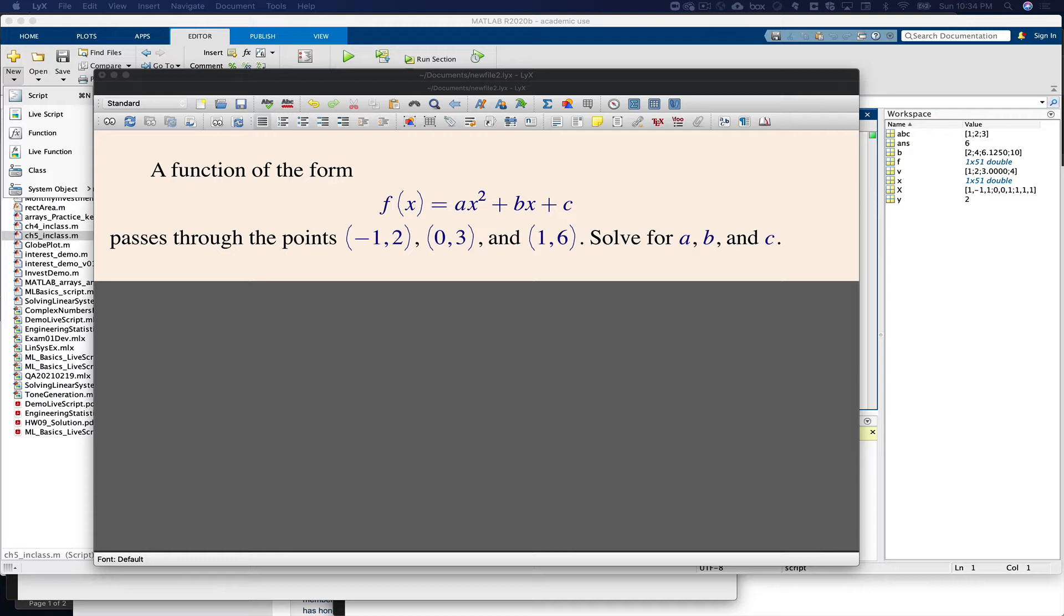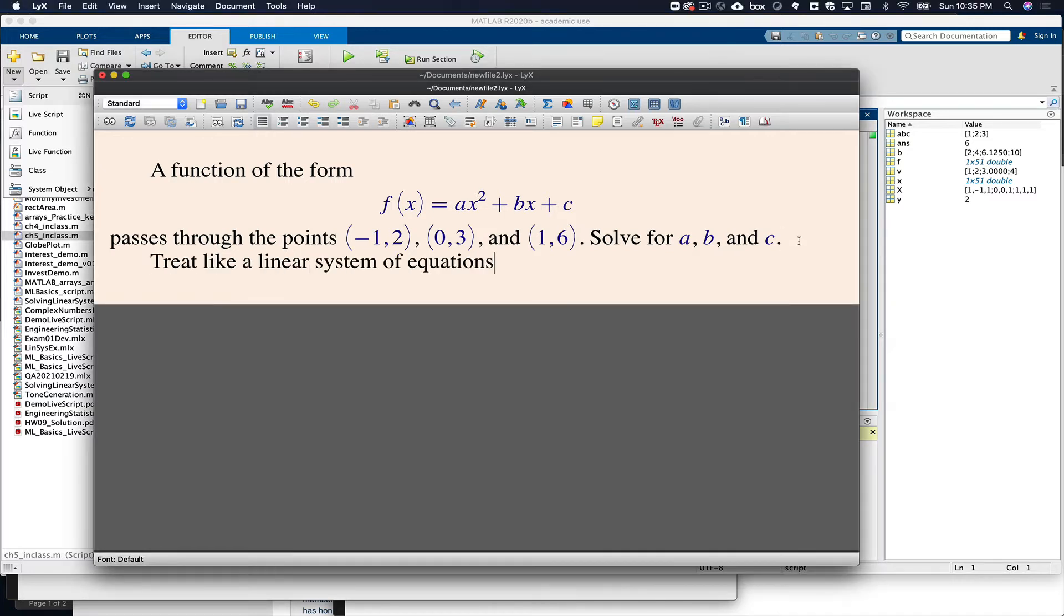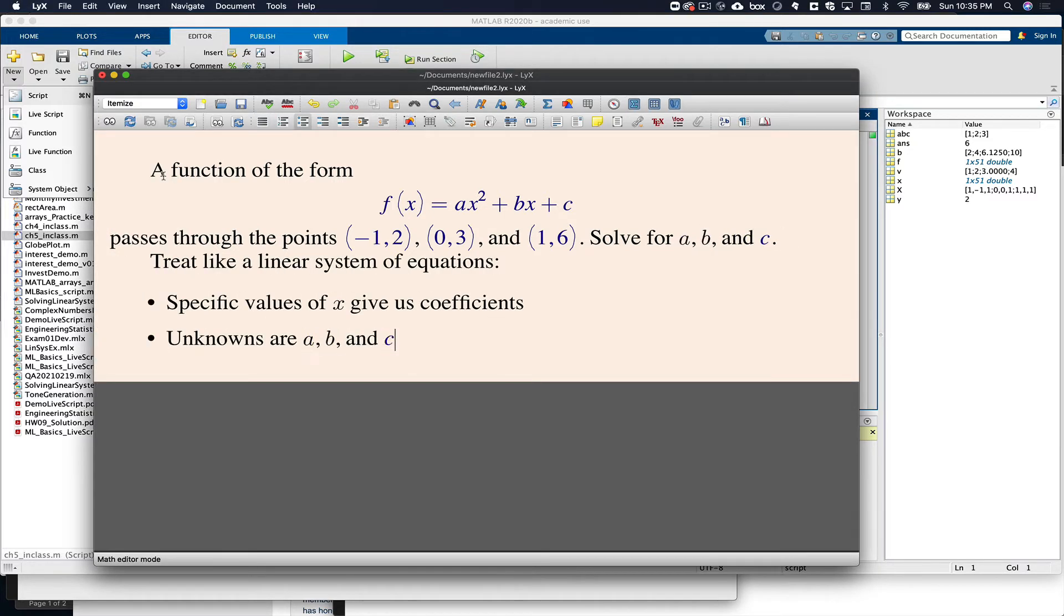We can actually treat this like a linear system of equations because we have specific values of x and specific values of f. So if we treat this like a linear system of equations, then specific values of x give us coefficients and the unknowns are a, b, and c.